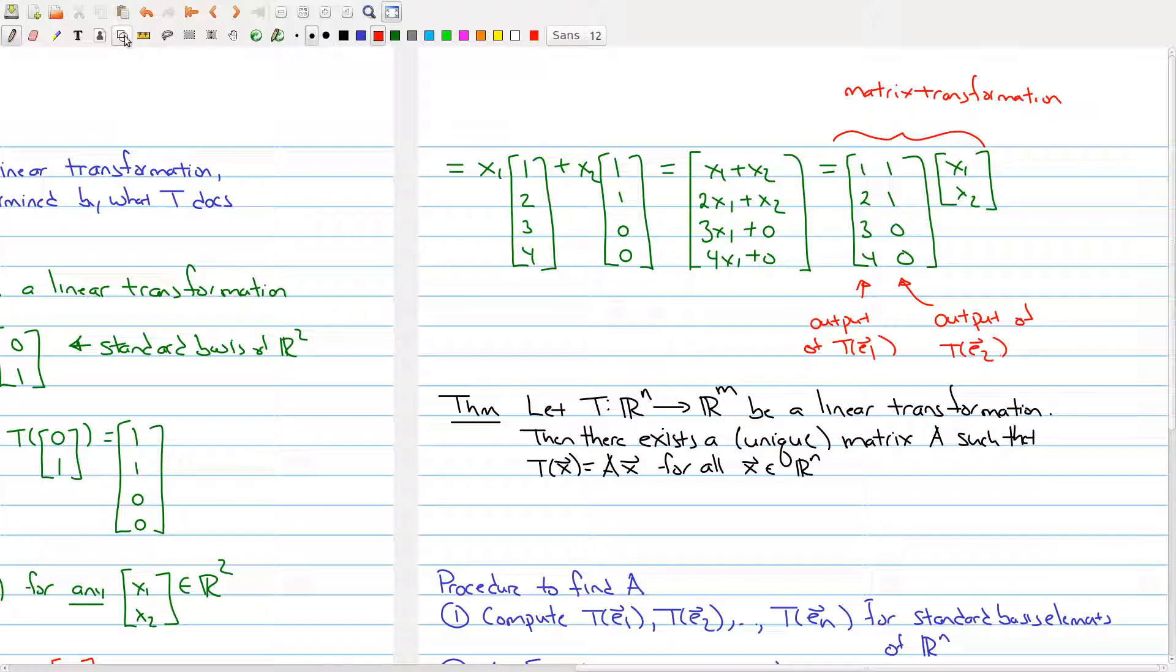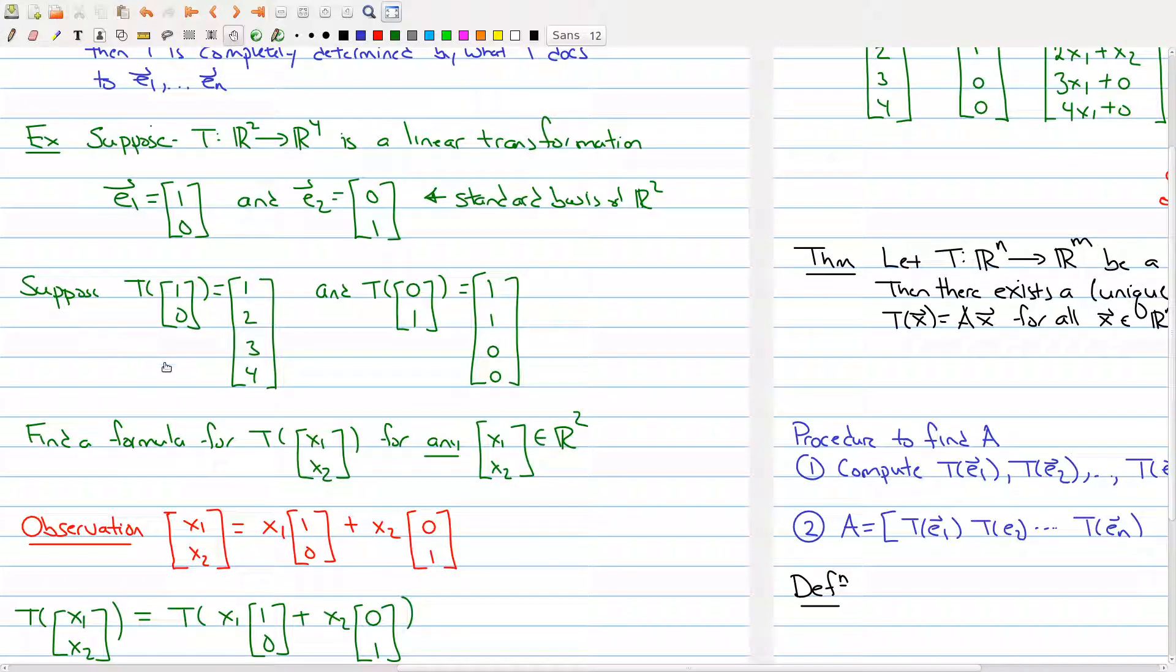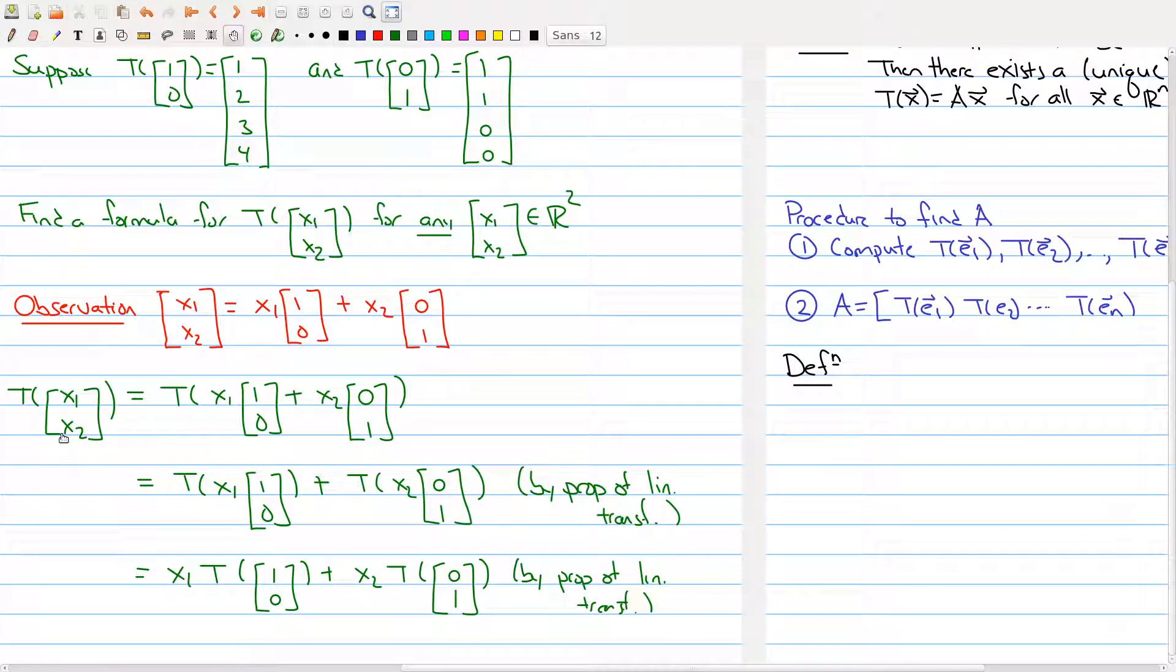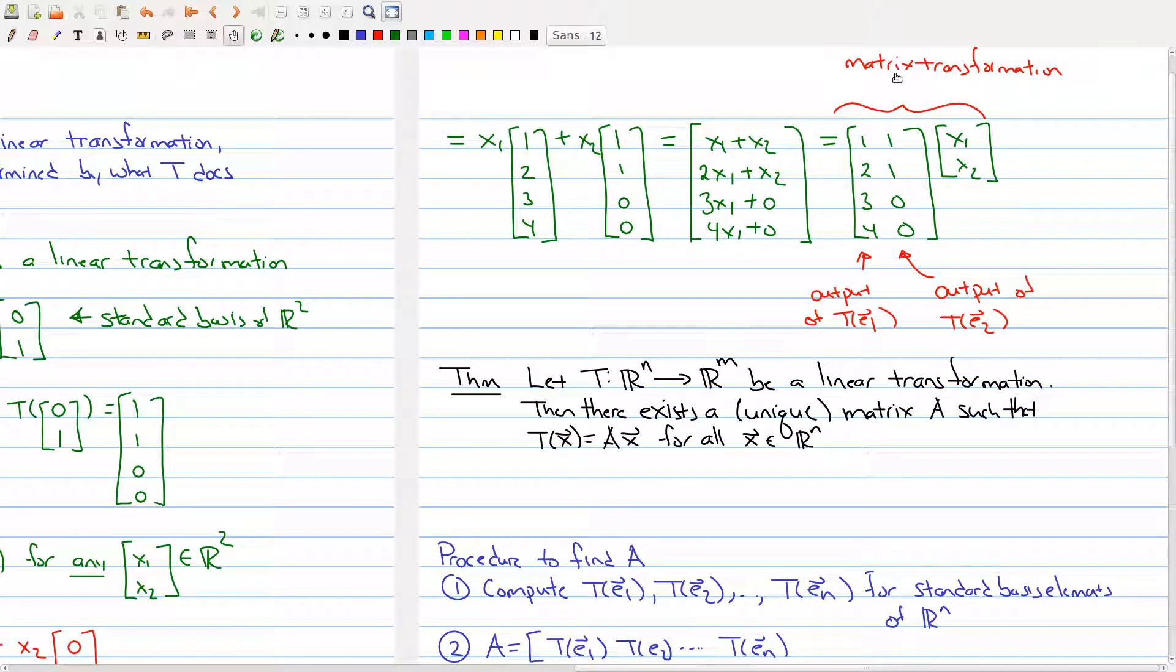So just kind of a recap here, just quickly summarize some of what's happening in this example. We have a linear transformation. We know where it's sending the standard basis element. And we can now use this observation to come up with a formula saying that for any x1 and x2, I want to send it to this vector right here. So using those pieces of information, I can figure out where any vector goes to. And then I have this observation that, hey, what I've really done is I've taken my linear transformation and wrote it in terms of a matrix multiplication, matrix transformation.